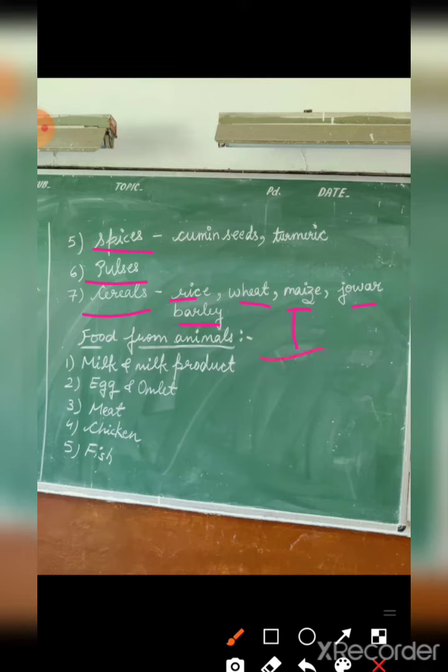Next, food from animals — which you get from animals. Milk and milk products: from milk you get cheese, curd, butter, ghee — all milk products. Next, egg and omelette. Then meat, chicken, and fish. Those who eat animal products are non-vegetarian. Those who eat only plant-based foods are vegetarian.